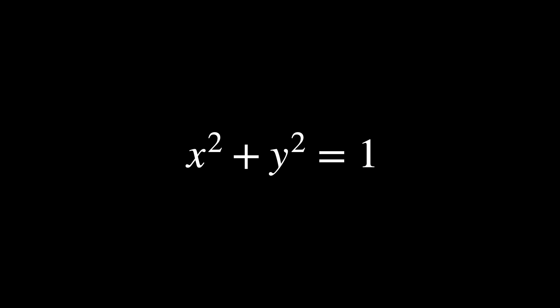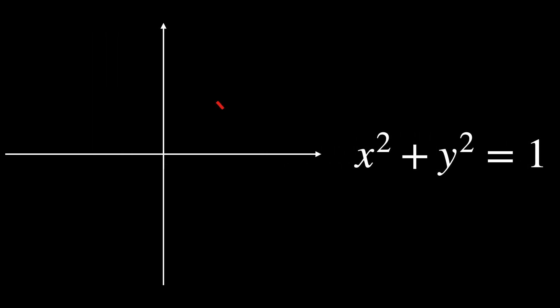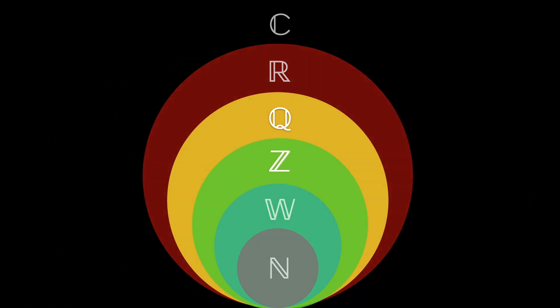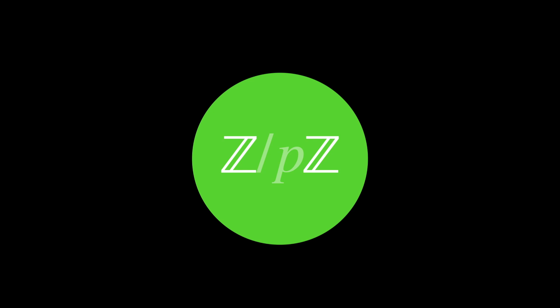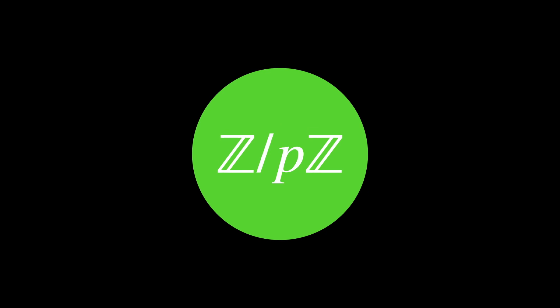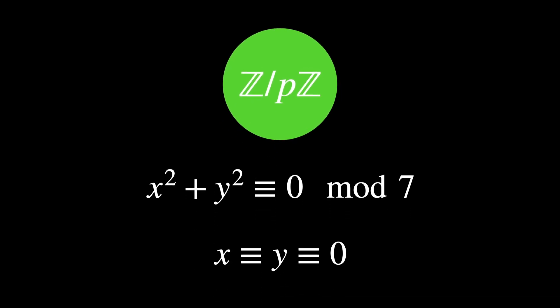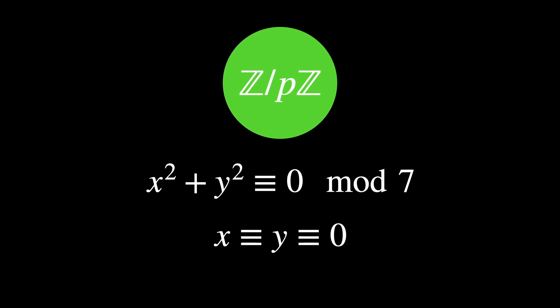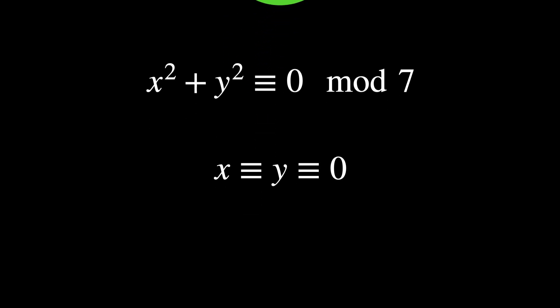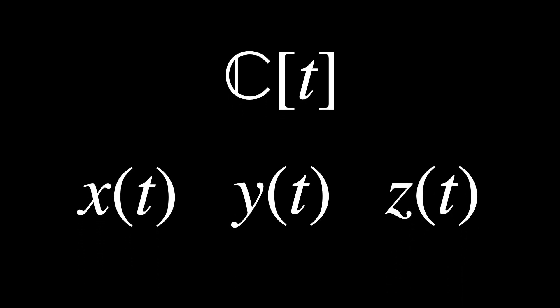If we had an equation like x squared plus y squared equals 1, we would find that it has infinitely many rational solutions, but geometrically it describes a circle in real numbers. Although we solved the problem over the integers and rationals, the equation can be analyzed over other algebraic structures, like finite fields. The equation x squared plus y squared equivalent to 0 modulo 7 has no solutions except when x is equivalent to y, which is equivalent to 0. Or over polynomials with complex coefficients, where solutions can be parameterized as x(t), y(t), and z(t), linking arithmetic and geometry in a broader sense.